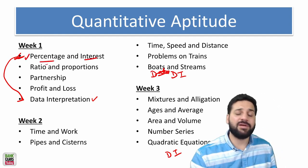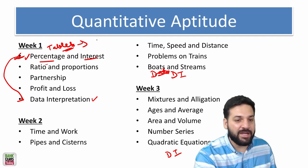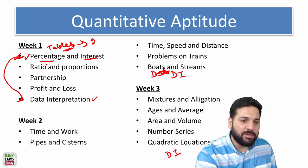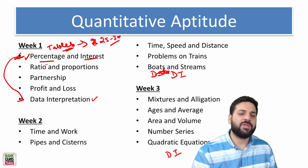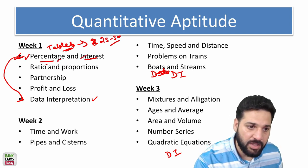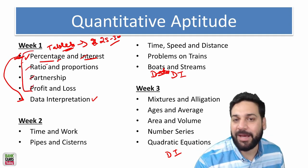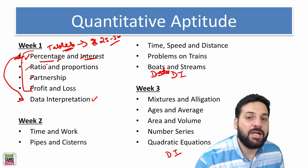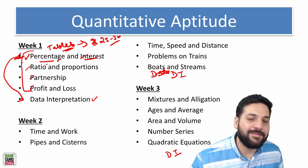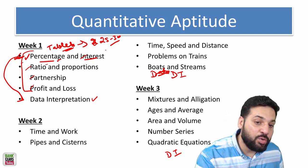You should start with percentages and interest. Simple percentages, simple ratios. Even before that, if you do not remember the tables, that should be your priority. Give at least one day, learn tables up to 30. Then move on to percentages and interest, ratios and proportion, partnership and profit and loss. These are the easiest chapters in the quantitative aptitude section.